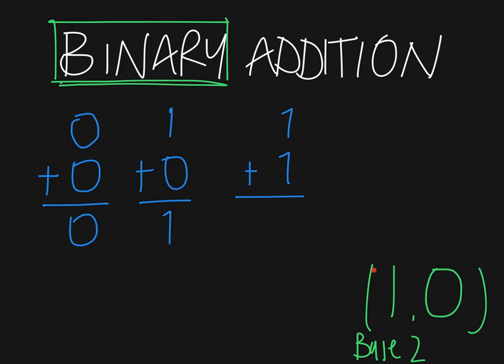So binary, base 2, and these two numbers are three basically three expressions of the same idea.